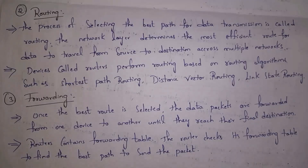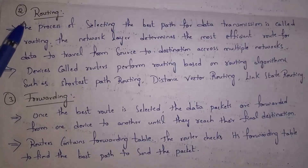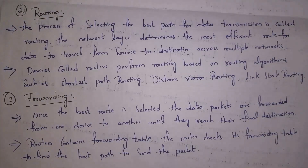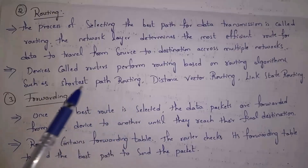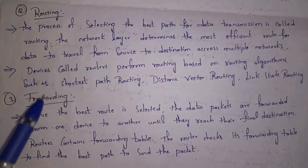The second function is routing. The network layer will find the best route in order to send data, so data will be transferred from sender to receiver very fast. The process of selecting the best path for data transmission is called routing. In order to find the best path, the network layer uses various routing algorithms such as shortest path routing, distance vector routing and link state routing.